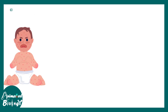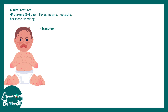Regarding clinical symptoms, in the prodrome phase, fever, malaise, headache, and vomiting are all common. In an exam context, it's important to note that the rashes begin on the face first and then eventually spread to the extremities in a centrifugal pattern.